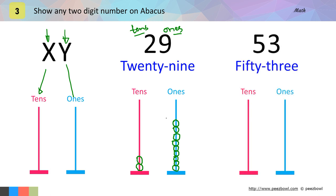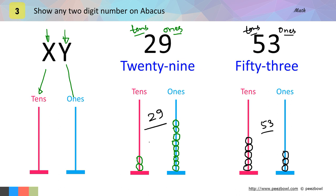For example, in 53 we have 5 at the tens place and 3 is at the ones place. So I will draw 5 circles on the tens line: 1, 2, 3, 4 and 5 circles on the tens line. And 1, 2 and 3 circles on the ones line. This is how number 53 is written, and this is how number 29 is written. Notice the number of tens and number of ones on the abacus. I am sure you can show any 2-digit number on the abacus. Please practice more examples to learn this concept better. Thank you for watching.